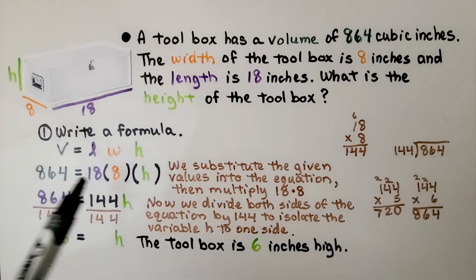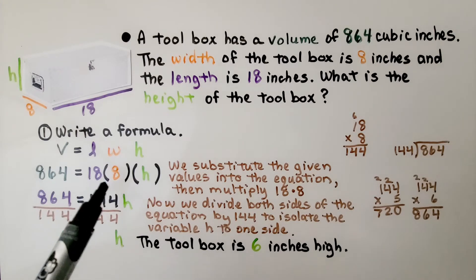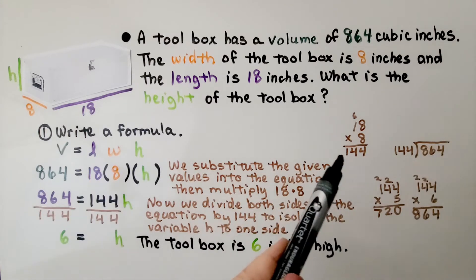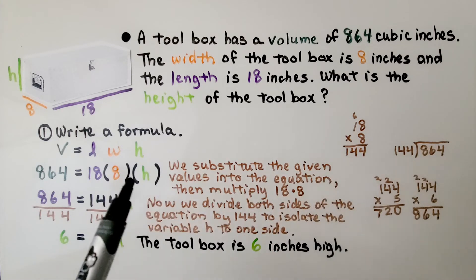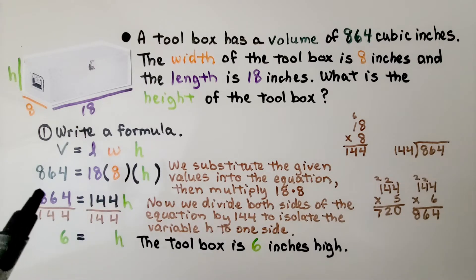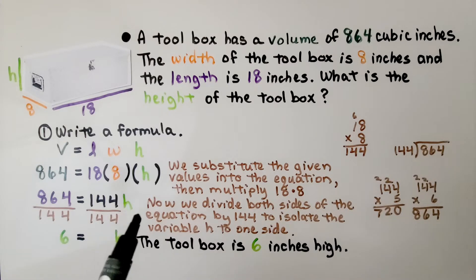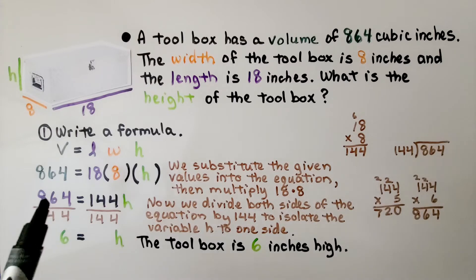We put in the given information. The volume is 864, the length is 18, and the width is 8. We substitute in all the values. Now we multiply 18 times 8 and get 144. We know 144 times the height will equal 864. Now we divide both sides of the equation by 144 to isolate the variable h. 864 divided by 144 is 6.